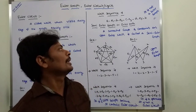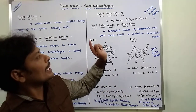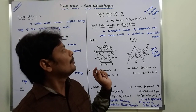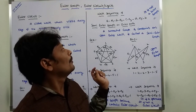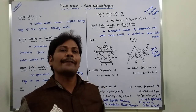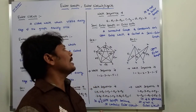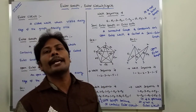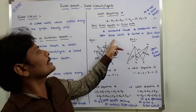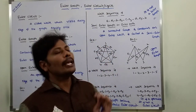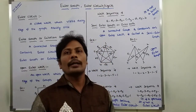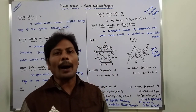When a graph G contains an open Euler walk, visiting every edge of the graph exactly once, then it is called a semi-Euler graph or Euler path.